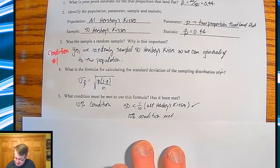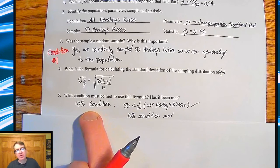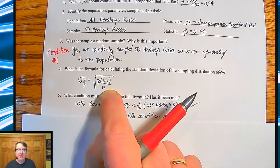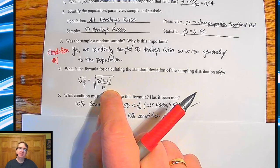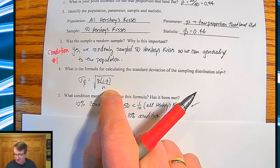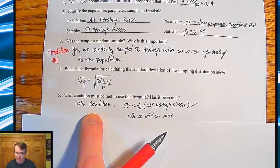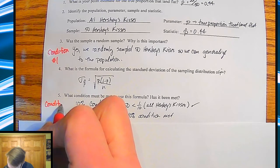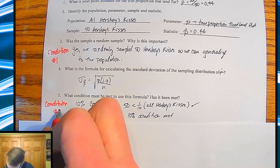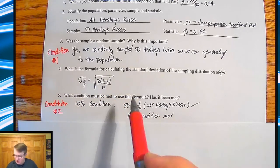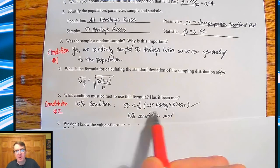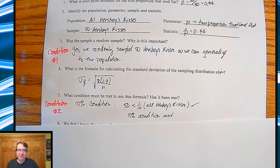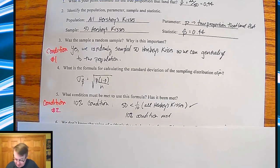What condition must be met to use that formula? We have a 10% condition. To use this formula, we have to show that by not replacing things, it's not going to be affecting the results. You have to have sampled less than 10% of the population. That's Condition Number 2 — the 10% condition. 50 is definitely less than one-tenth of all Hershey's Kisses produced, so the 10% condition is met.